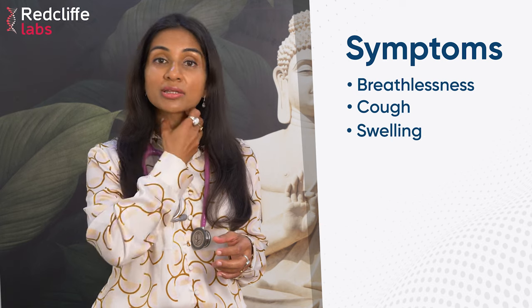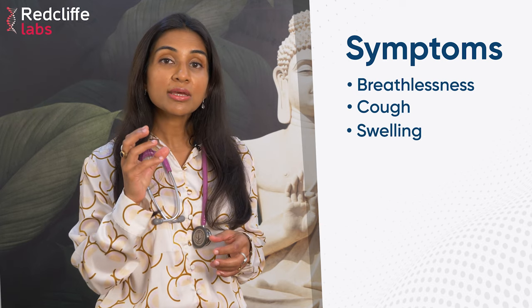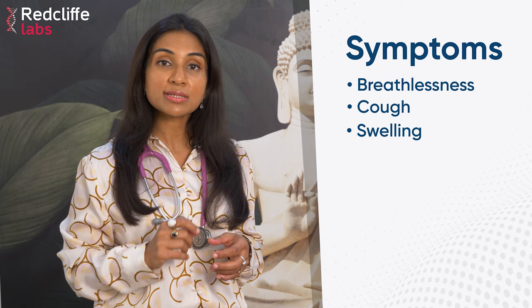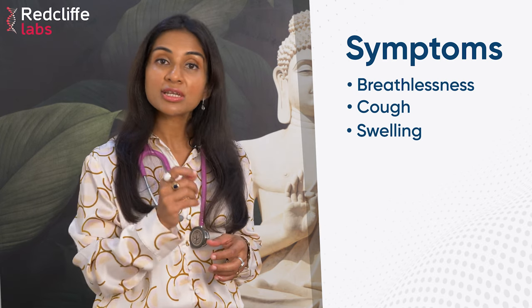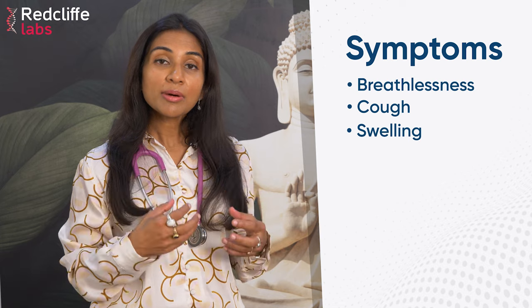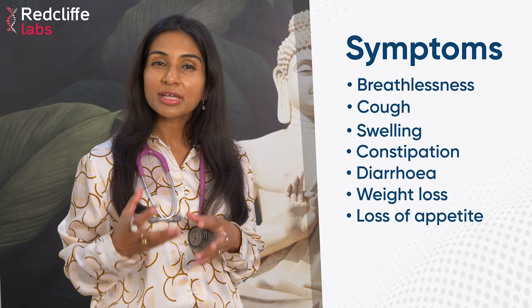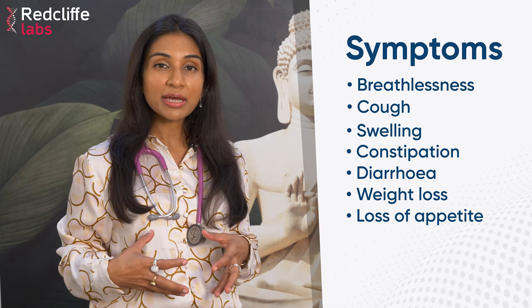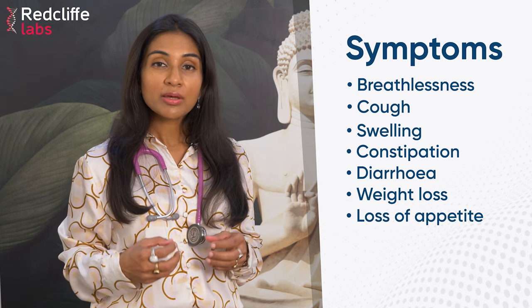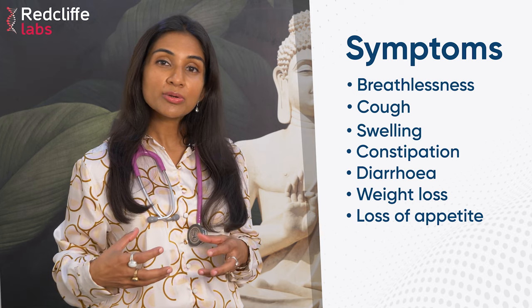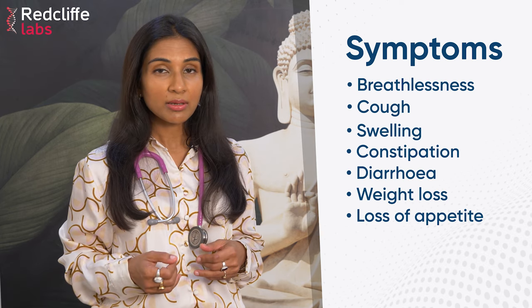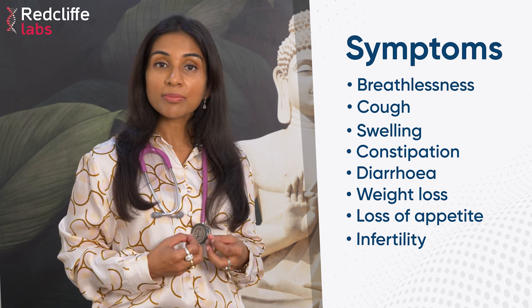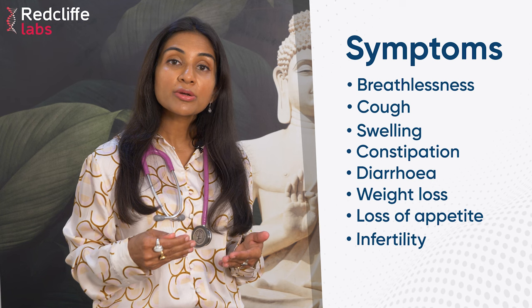Some people have swelling of the lymph nodes, which is lymph node tuberculosis or lymphadenitis. TB can also cause intestinal tuberculosis, and genital tuberculosis can lead to infertility and difficulty conceiving.